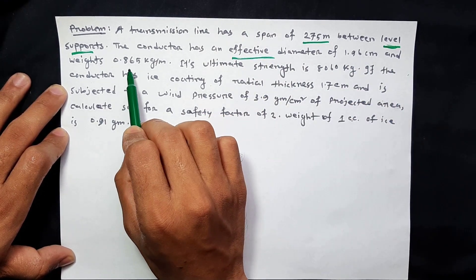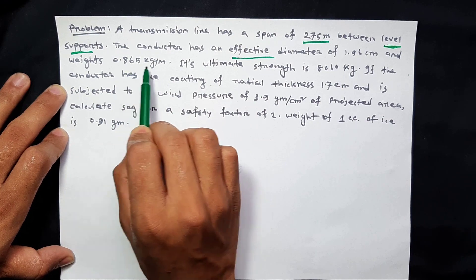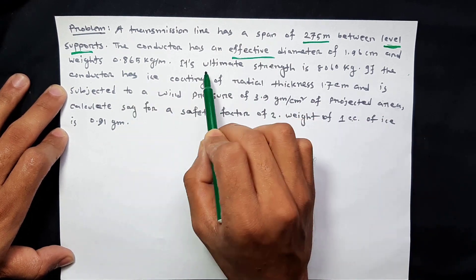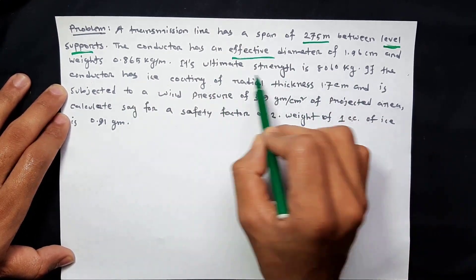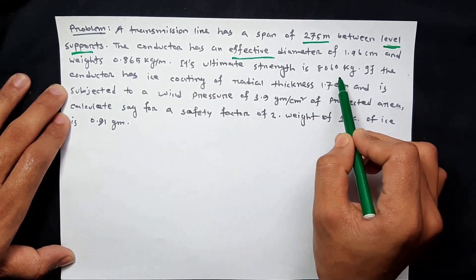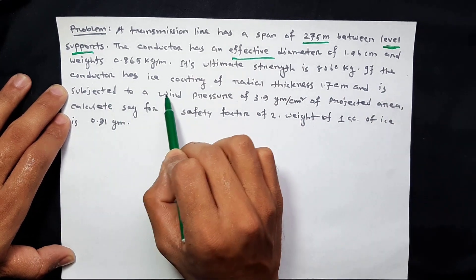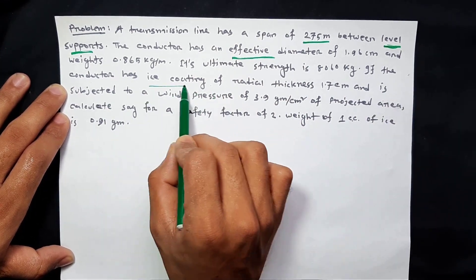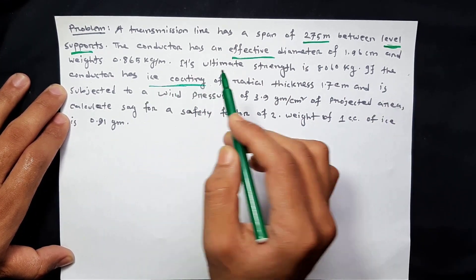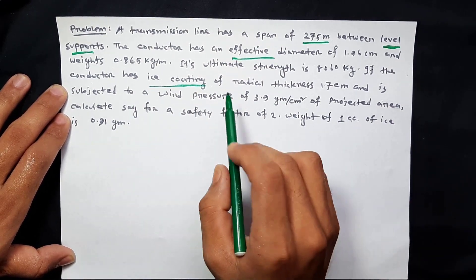The conductor has an effective diameter D in centimeters. And weight. Its ultimate strength. If the conductor has ice coating — that means the conductor has ice coating.